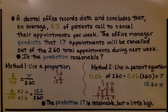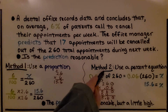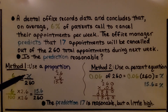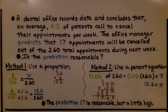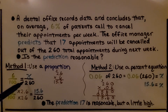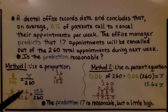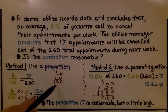Is the prediction reasonable? We have Method 1, using a proportion, and Method 2, using a percent equation. For the proportion, 6% is six hundredths, set equal to x over 260 total appointments. We think: 100 times what equals 260? That's 2.6. We multiply the numerator by the same factor, 2.6, and get 15.6.